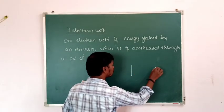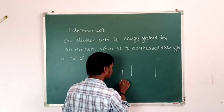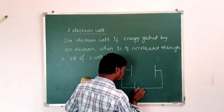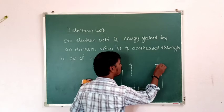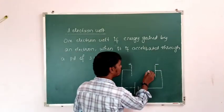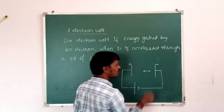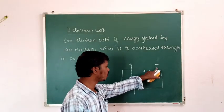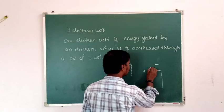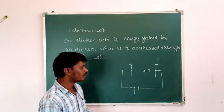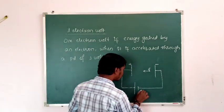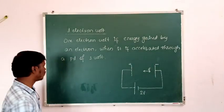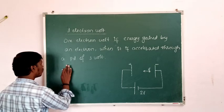Consider a setup where one electrode is connected to the positive terminal of the battery and the other to the negative terminal. The electron is repelled by the negative potential and attracted by the positive potential — there is a force of repulsion between negative charges and force of attraction between opposite charges. So the electron is accelerated through a potential difference of 1 volt, and the energy gained by this electron is called one electron volt.